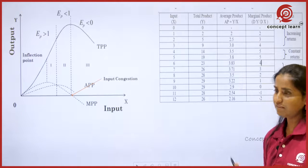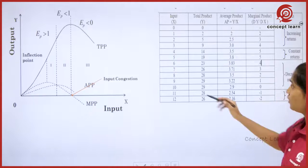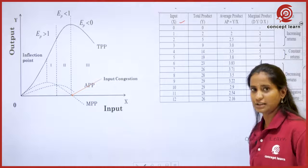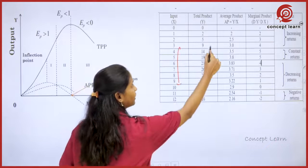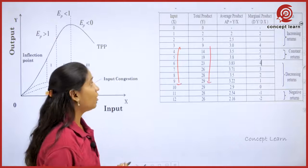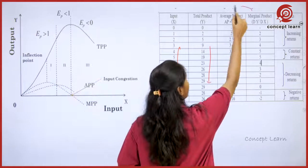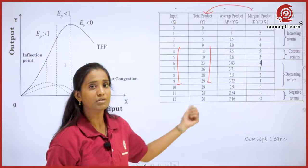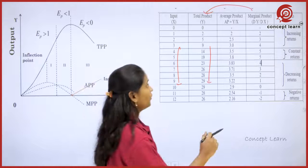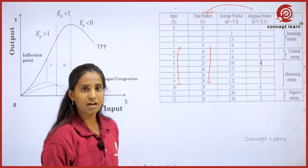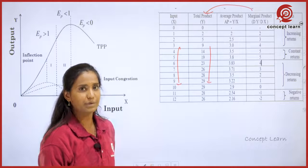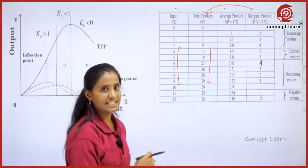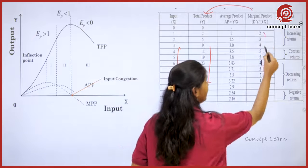Some factors are fixed. Now as we change the input factor — let it be labor or any other input factor — the input varies. We have already understood how the Total Product changes. Now we will understand how the Marginal Physical Product is in relation with the Total Physical Product. Marginal Physical Product is: for every change in the input, how the output is changing — that is dy by dx, change in output to the change in input.